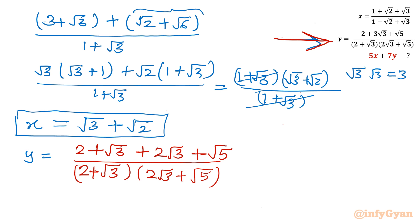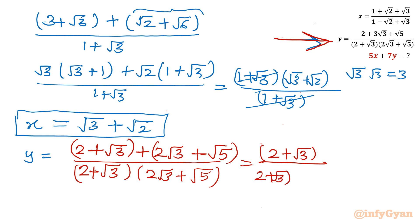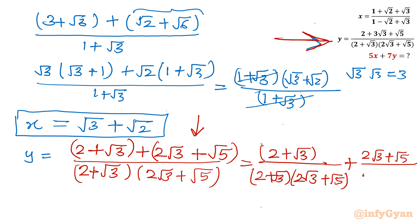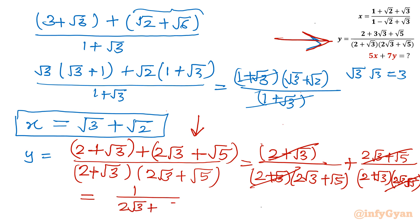Now I will split the numerator into two separate fractions. The first term gives (2 + √3) / ((2 + √3)(2√3 + √5)) and the second term gives (2√3 + √5) / ((2 + √3)(2√3 + √5)). In the first fraction (2 + √3) cancels, leaving 1/(2√3 + √5). In the second fraction (2√3 + √5) cancels, leaving 1/(2 + √3). So y = 1/(2√3 + √5) + 1/(2 + √3).